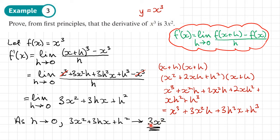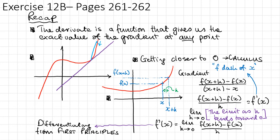So this 3x squared gives us the gradient of the x cubed graph. At any point, you just put an X coordinate in, and you'll get the gradient. So if I was looking at the x cubed graph and I had X equals 1, putting 1 into 3x squared gives me the gradient of 3 — so at X equals 1, the gradient is 3 times 1 squared, which is 3. You should now be able to do exercise 12B on pages 261 to 262 of the textbook.